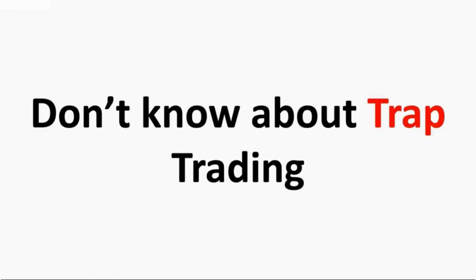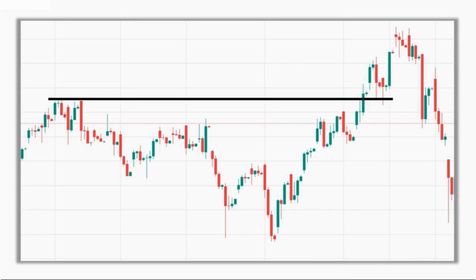The third mistake that traders make is that they don't know anything about trap trading. There are operators in the market who set traps for retail investors like us, and most of the time beginner traders and even professional traders enter these traps and make a loss. As you can see on the screen, there is a chart where the price gives a breakout — any trader would naturally buy here, expecting an uptrend. But instead, the price does not sustain the breakout and goes bearish again. This is called a false breakout, which is a kind of trap. You cannot completely eliminate traps, but you can minimize them using volume and other indicators. I will make a video on how to identify a strong breakout versus a false breakout.